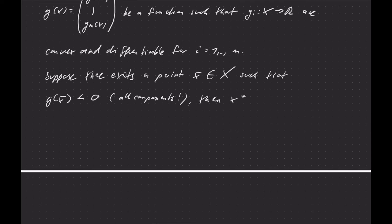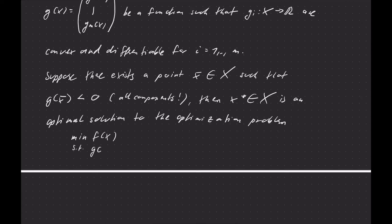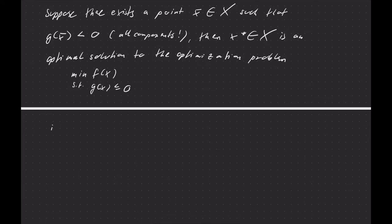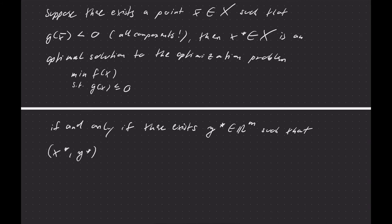And then we can characterize optima. Then x* ∈ X is an optimal solution to the optimization problem, the usual one, minimize f(x) subject to g(x) ≤ 0. If and only if there exists a multiplier vector y* ∈ ℝᵐ, so one multiplier for each constraint, such that x* together with this multiplier y* is a KKT point.